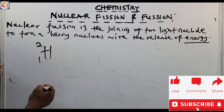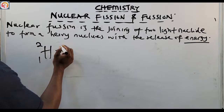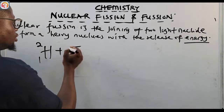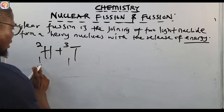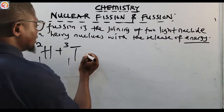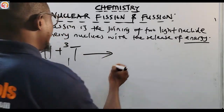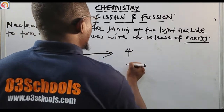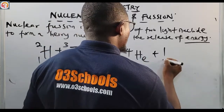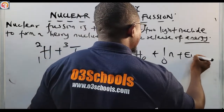The equation is: deuterium (H-2-1) plus tritium (H-3-1) — both have atomic number 1 — gives us helium nucleus (He-4-2) plus a neutron (n-1-0) plus energy.